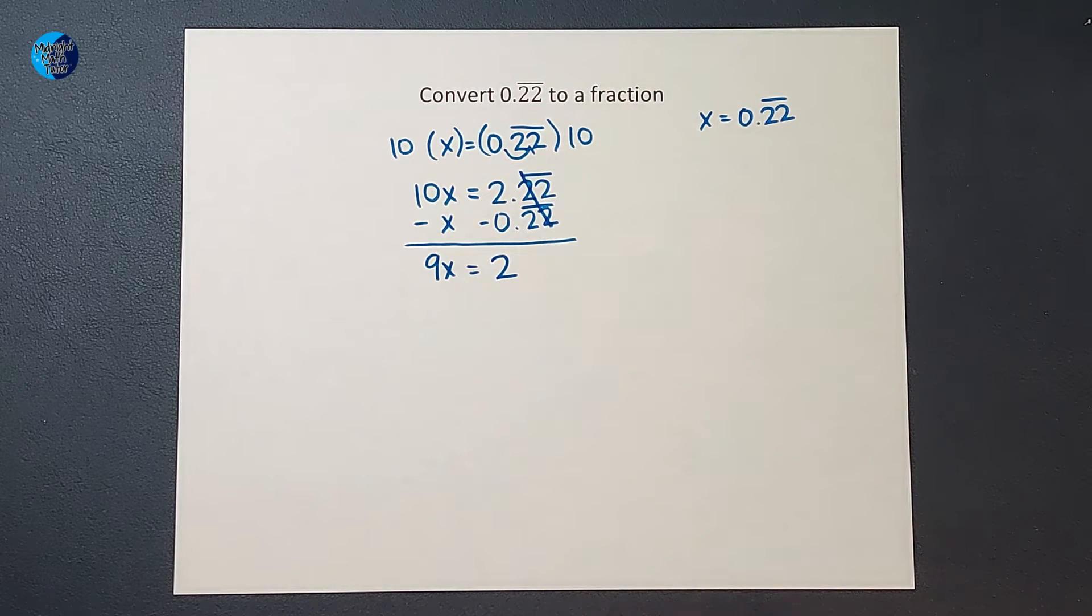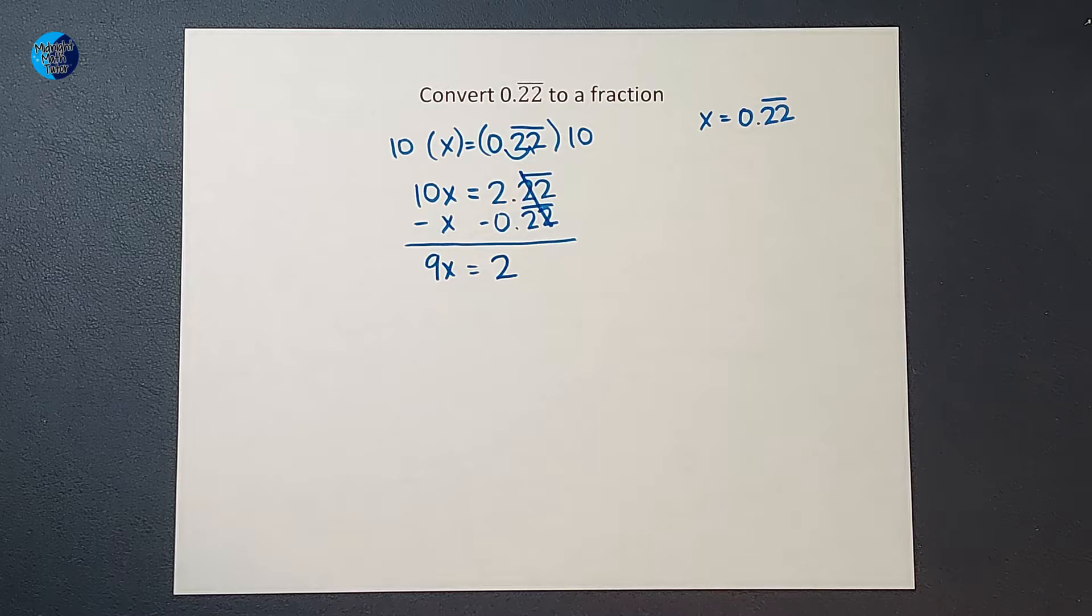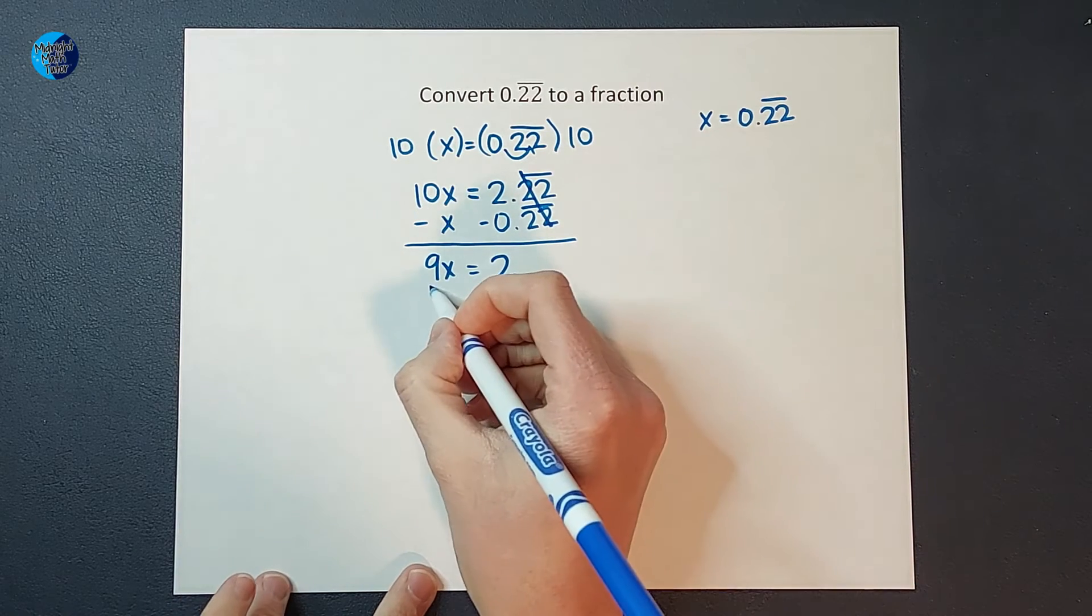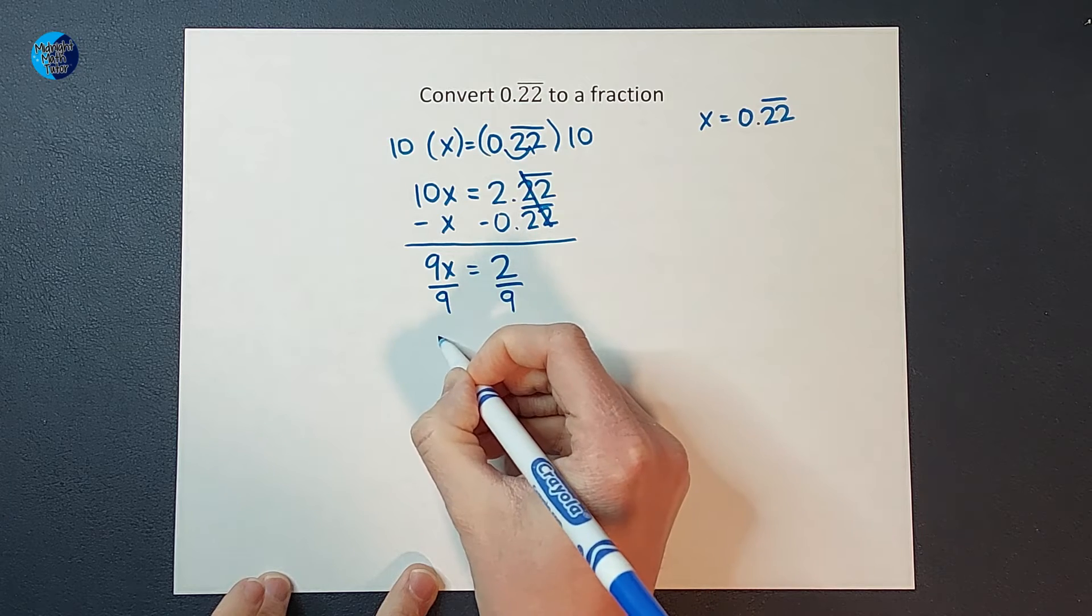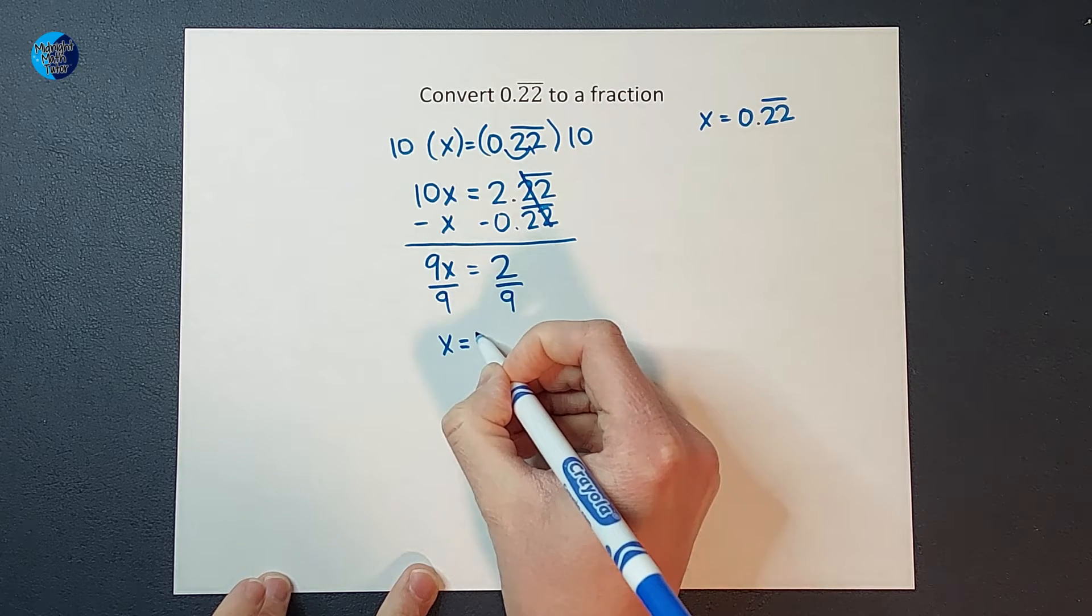Oh my heck, that is looking a lot more simple. So what do I do from here? I divide by 9 on both sides. And I end up with x equals 2 ninths. What?